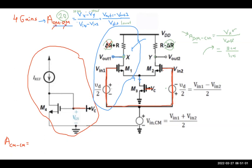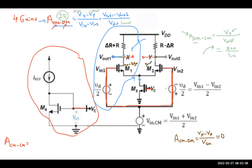For ACM-DM — common mode input, differential output — ideally this is zero, since VCM drives both transistors identically and Vx − Vy = 0. However, if there is a mismatch, such as one transistor having transconductance gm + Δgm and the other gm − Δgm, or mismatched resistors, ACM-DM will not be zero.